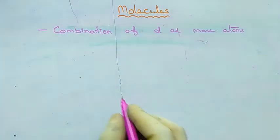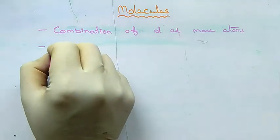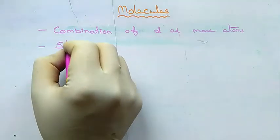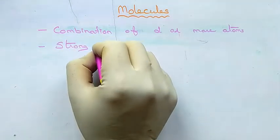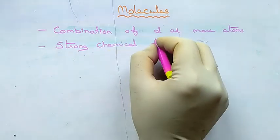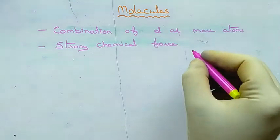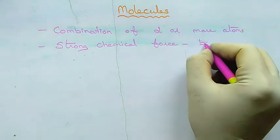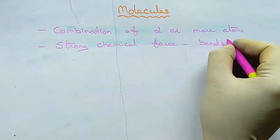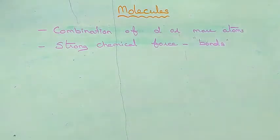Next we are going to see about molecules. Molecules are the combination of two or more atoms that are strongly held together by chemical forces called chemical bonds. Chemical bonds are the reason behind the formation of molecules.